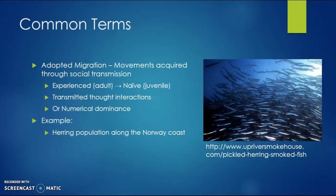Some other common terms we're going to discuss are adopted migration. Adopted migration is movement acquired through social transmission. This is when an experienced or adult fish will teach a naive or juvenile fish. This is transmitted through interactions or numerical dominance. An example of this is the herring populations off the Norwegian coast.